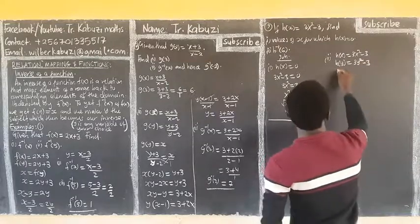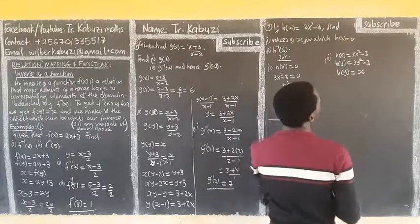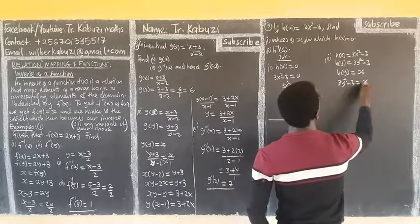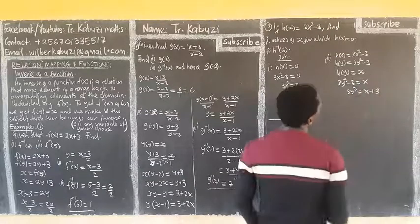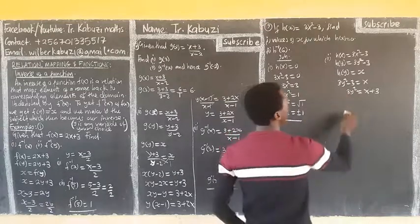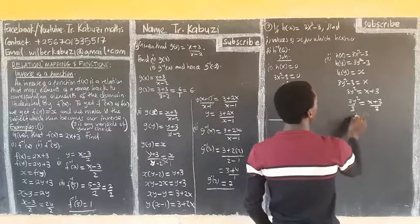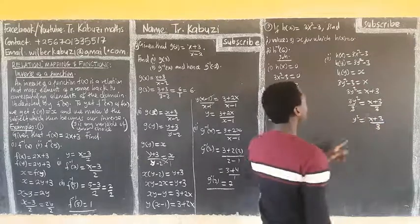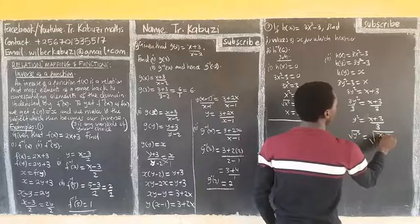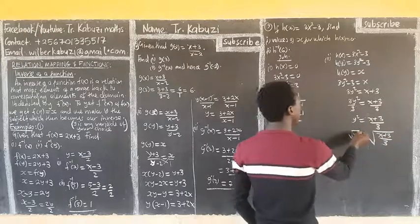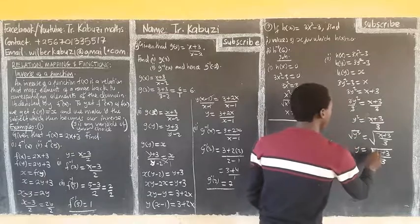We equate h of y to x. So 3y squared minus 3 equals x. Make y the subject: take 3 to the other side, giving 3y squared equals x plus 3. Divide both sides by 3: y squared equals x plus 3 over 3. Take the square root of both sides: y equals the square root of x plus 3 over 3. Now this y becomes our inverse. So h inverse of x is the square root of (x plus 3) over 3.